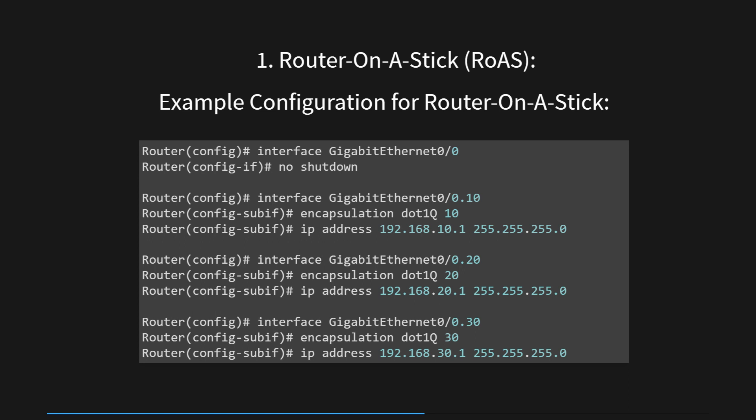Here's the explanation of each configuration step. Step 1: 'interface GigabitEthernet 0/0' — this command enters the configuration mode for the GigabitEthernet 0/0 interface, which will be used for trunking VLANs. Step 2: 'no shutdown' — this command enables the GigabitEthernet 0/0 interface, ensuring it is active and ready to process traffic. Step 3: 'interface GigabitEthernet 0/0.10' — this command creates a sub-interface for VLAN 10 on the GigabitEthernet 0/0 interface.